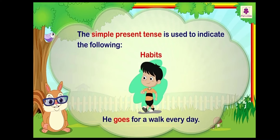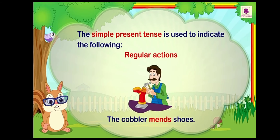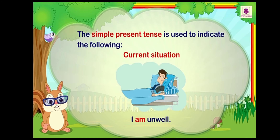The simple present tense is used to indicate the following actions. Habits: whenever we are talking about habits — 'he goes for a walk every day' — that's his daily action, so it falls in the category of simple present tense. Regular actions: 'the cobbler mends shoes' — whenever we are talking about a regular action, we always use simple present tense.